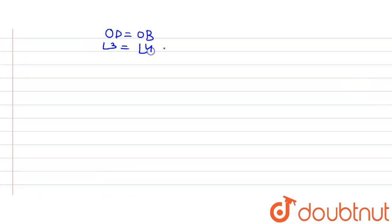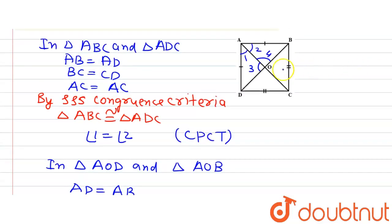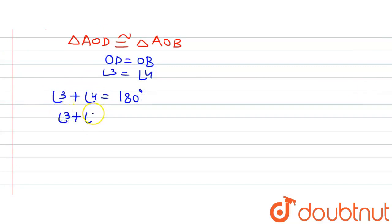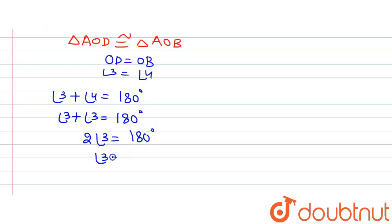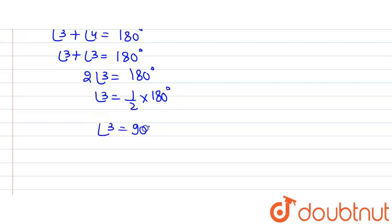Since angle 3 and angle 4 lie on a straight line, they form a linear pair, so angle 3 plus angle 4 equals 180 degrees. Because angle 3 equals angle 4, we can write angle 3 plus angle 3 equals 180 degrees, so twice angle 3 equals 180 degrees, giving angle 3 equals 90 degrees and therefore angle 4 equals 90 degrees as well.